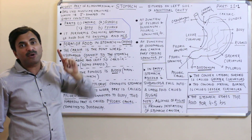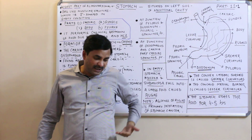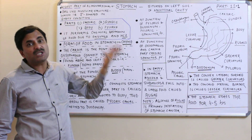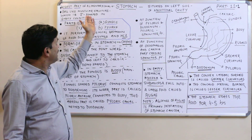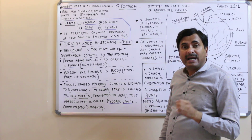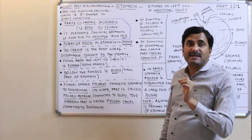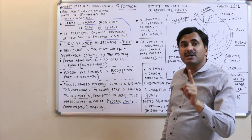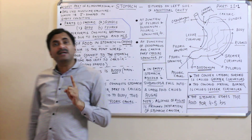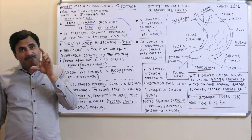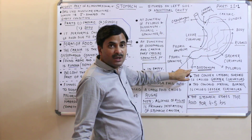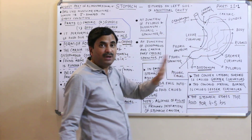The stomach is situated on the left side of the abdominal cavity, present below the diaphragm. It is the widest, meaning the broadest part of the alimentary canal. It is a bag-like muscular structure, and it is J-shaped when empty. It is present between the esophagus and the duodenum, which is the first part of the small intestine.